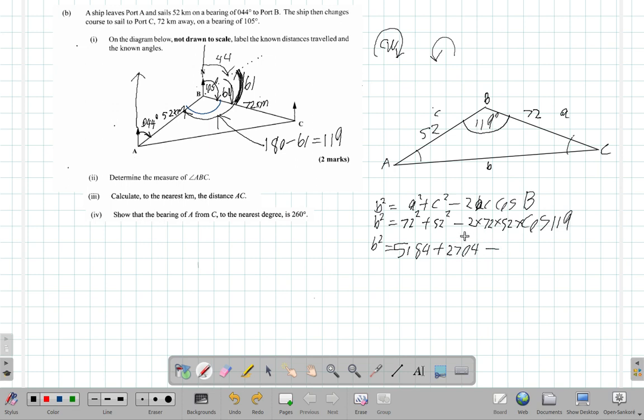Gives me 5,184 plus 52 squared gives me 2,704, minus 2 times 72 times 52 equals 7,488 times the cosine of... cosine of 119 is negative 0.48.